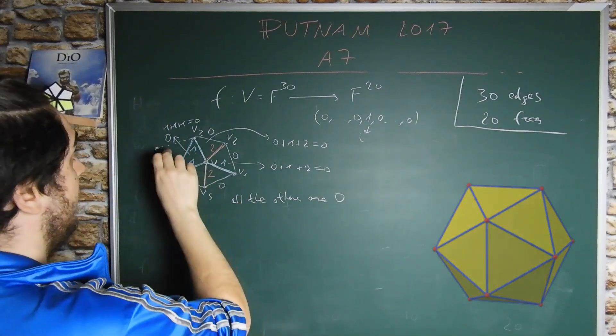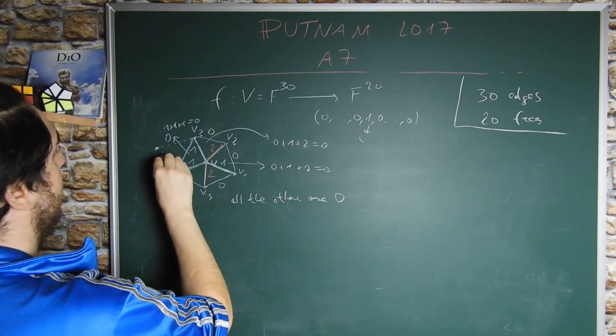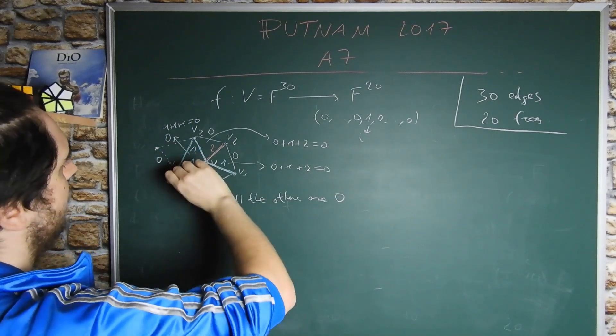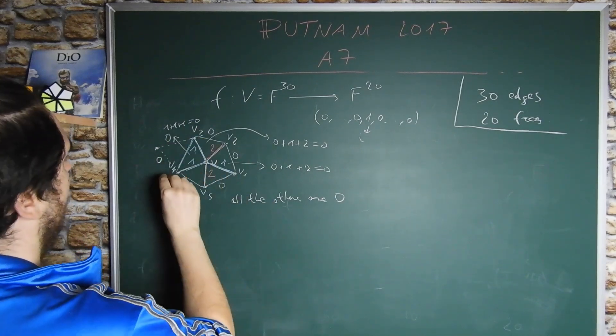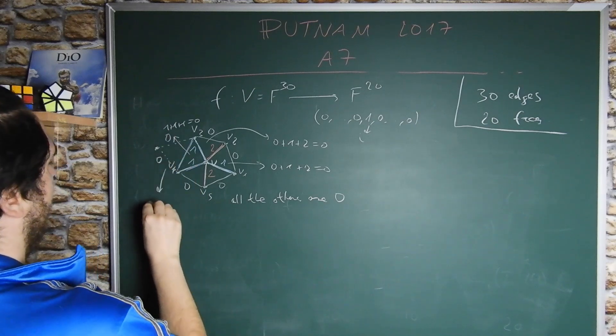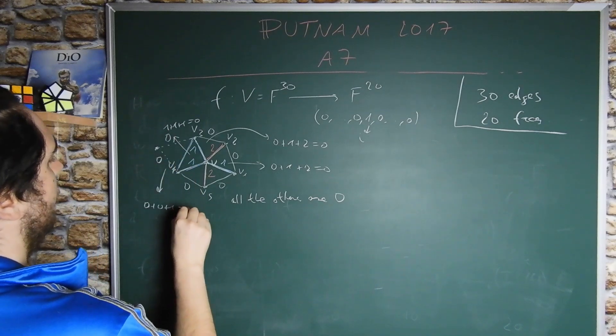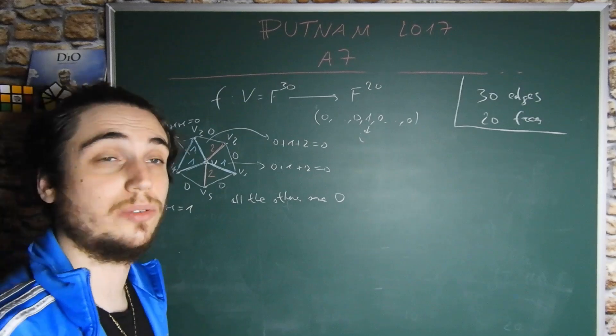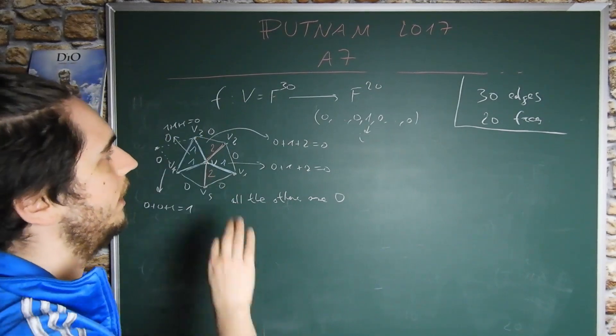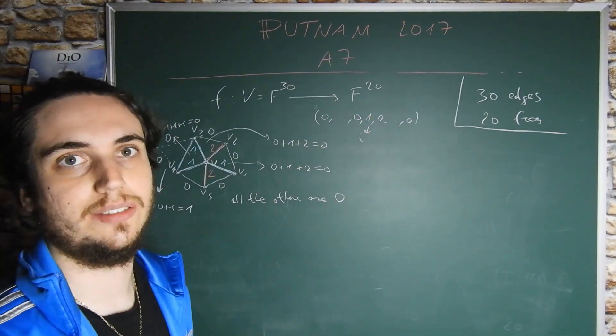This is another vertex going inside the board. We know it's 0 on this edge, 0 on this edge, and 1 on this edge. This gives us 0 plus 0 plus 1 which equals 1. In particular, we show from symmetry that the function F is surjective.